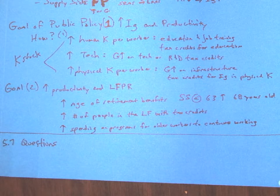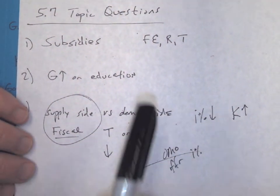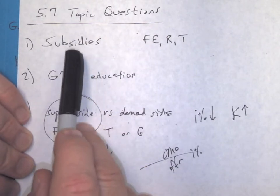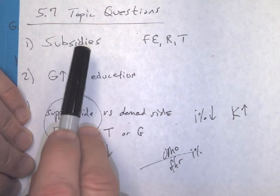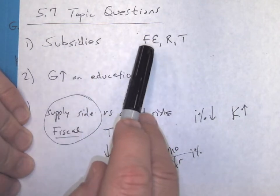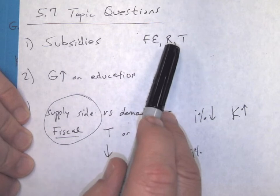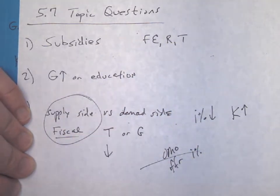So when you get to 5.7, there are some questions, and what they're going to ask you is about subsidies. And subsidies on the first topic question on AP Classroom is, remember, a government payment to a certain industry. And are they subsidizing employees? Remember full employment? Are they subsidizing resources, technology? Just think about subsidies and how they apply to public policy and growth.